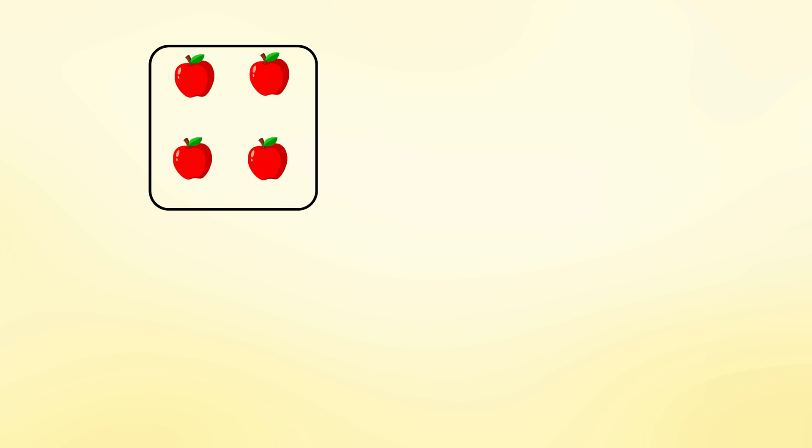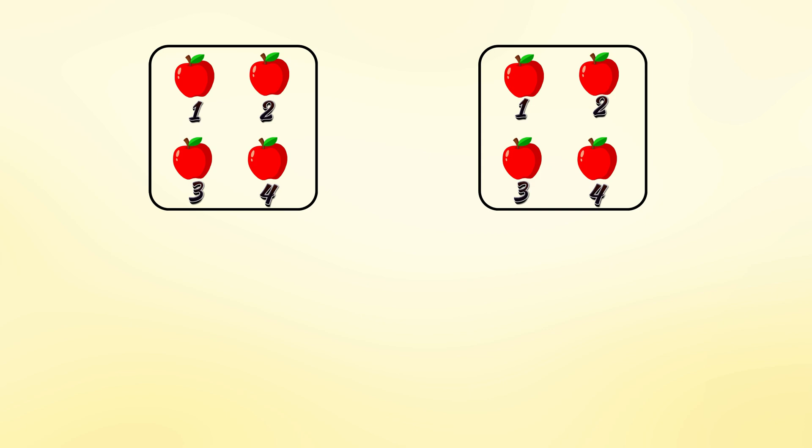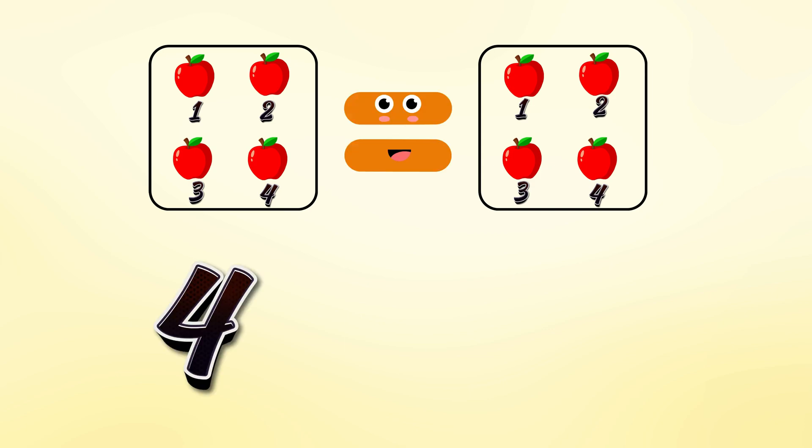We have one basket of apples. Let's count 1, 2, 3, 4. Now we have another basket of apples. Let's count 1, 2, 3, 4. They are the same. So, 4 equals 4.